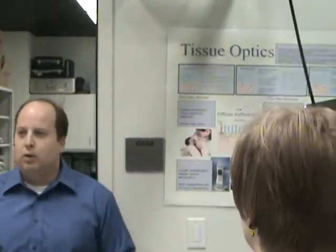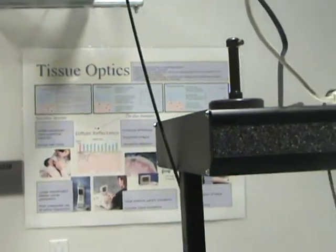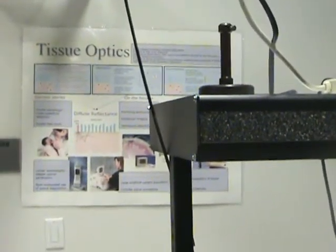Probably the most ubiquitous form of optical diagnostic device is the pulse oximeter, which you may have seen in hospitals. It's essentially a little clip that goes on your finger with a red light, and it uses the absorption characteristics of hemoglobin — deoxy and oxyhemoglobin — and the differences in these absorption spectra, the absorption as a function of wavelength, to provide information about the oxygenation of the tissue.